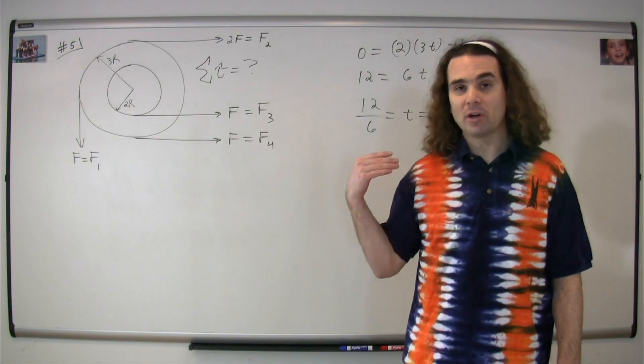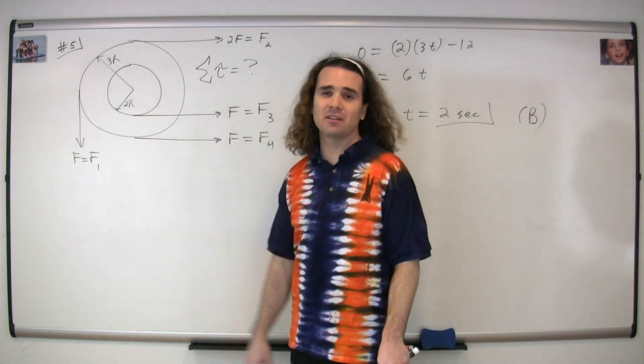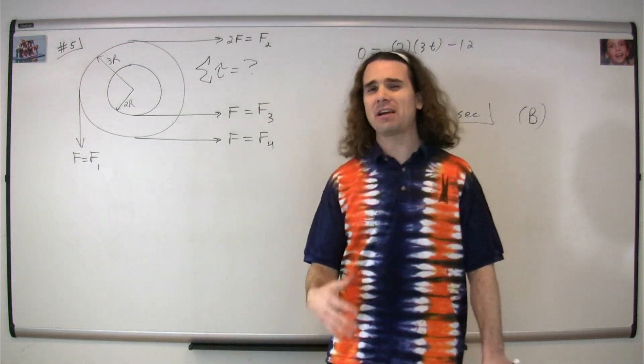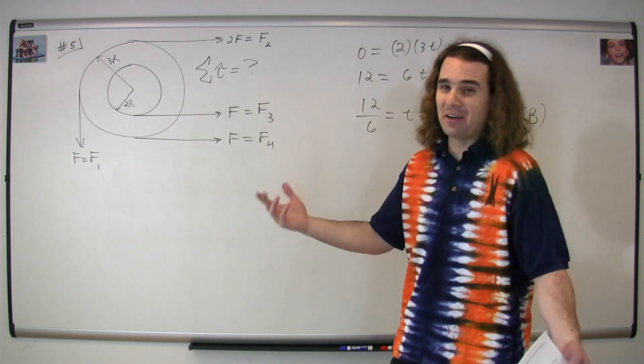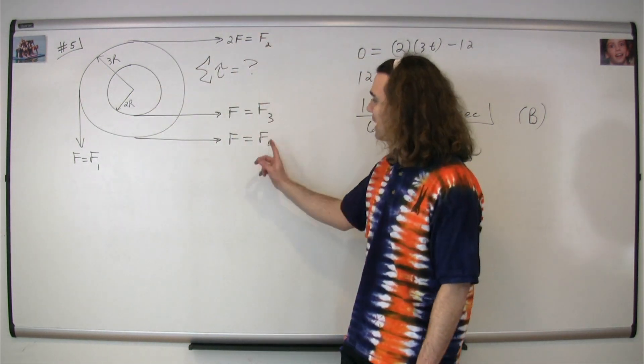Question number five asks us to find the net torque on this cylinder, which has four different forces acting on it. I've labeled them because it's hard to talk about them if we don't label them. This is force one, force two, force three, and force four.